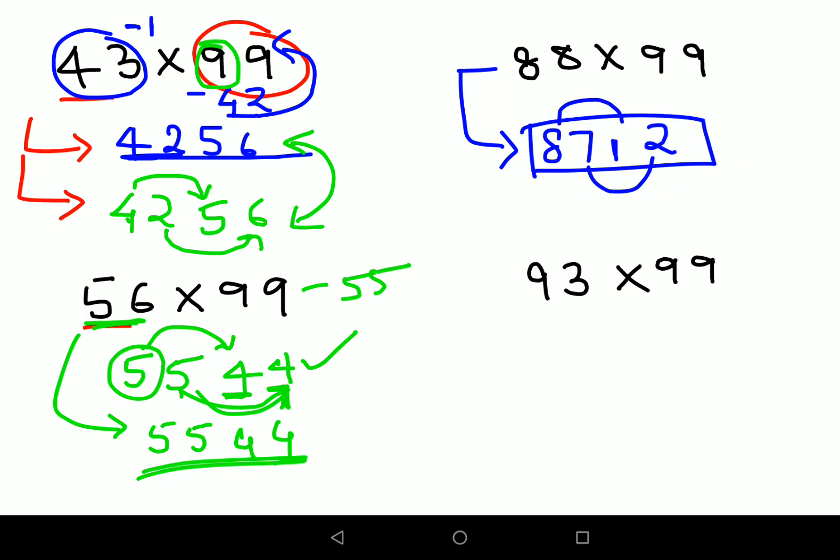Similarly, now let's look at 93. So again, 92 will be the first part of my answer. The next part would be, what do I need to add to 9 to get a 9? It is nothing but just 0. And what do I need to add to 2 to get a 9? You need to add 7. So 9207 is the answer for this one.